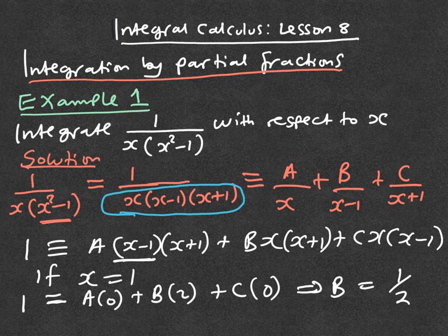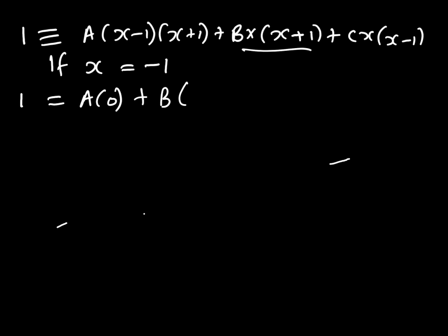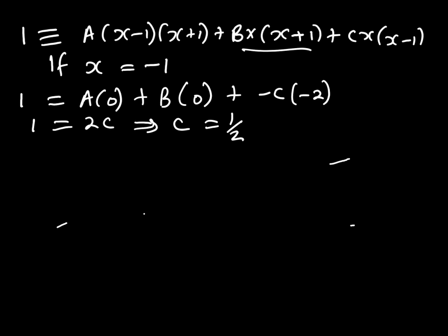Let's go ahead and find the value of C and A. We can kill the C bracket by substituting x equals negative 1. So I have 1 equals A times 0, plus B times 0, then plus C times negative 2. This gives us 1 equals negative 2C, so C is also equal to one half.